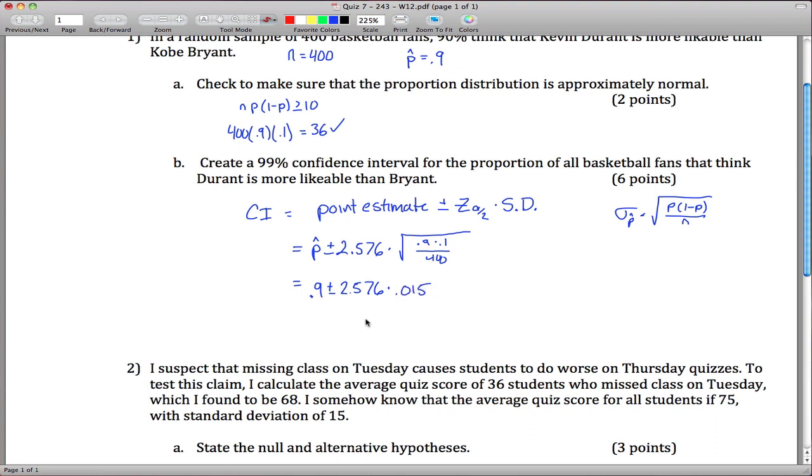If you do 2.576 times our standard deviation, you get 0.9 plus or minus 0.03864.